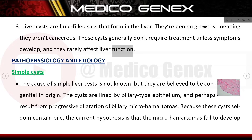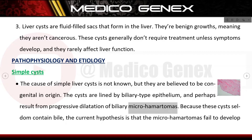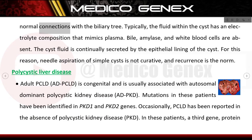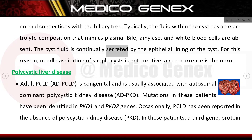Pathophysiology and etiology — simple cysts: the cause of simple liver cysts is not known, but they are believed to be congenital in origin. The cysts are lined by biliary type epithelium and perhaps result from progressive dilatation of biliary microhamartomas. Because these cysts seldom contain bile, the current hypothesis is that the microhamartomas fail to develop normal connections with the biliary tree. Typically, the fluid within the cyst has an electrolyte composition that mimics plasma; bile, amylase, and white blood cells are absent. The cyst fluid is continually secreted by the epithelial lining, so needle aspiration is not curative and recurrence is the norm.